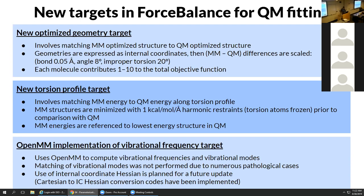There was an existing vibrational frequency target, but we weren't able to calculate frequencies in OpenMM before - this is now implemented. The torsion atoms are frozen in the constrained minimization. It is in principle possible to use a package like geomeTRIC to freeze the torsion angle and relax everything else, but that optimization is much more expensive and we're doing millions of these in every cycle of parameter optimization. So there is an approximate component to this freezing of the torsion angle.